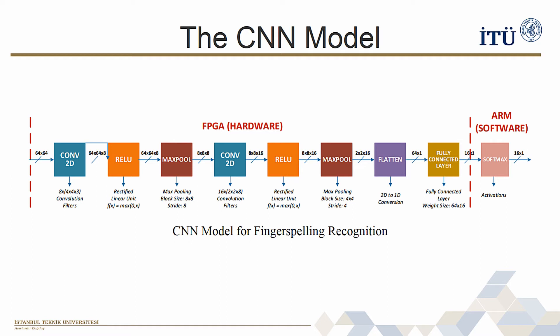In the CNN architecture we use for finger spelling recognition, there are two convolution layers which are followed by ReLU and MaxPool layers. Finally, the data is flattened and fed to the fully connected layer, then the produced outputs are sent to the microprocessor and the softmax function is applied to conclude the classification.